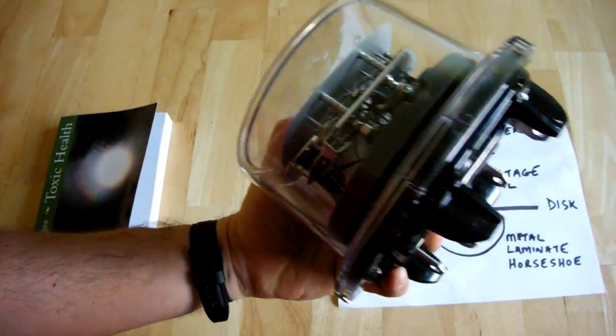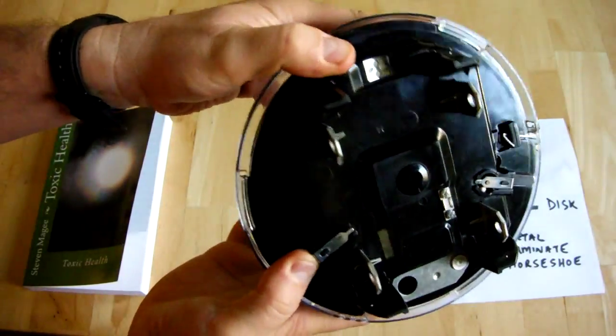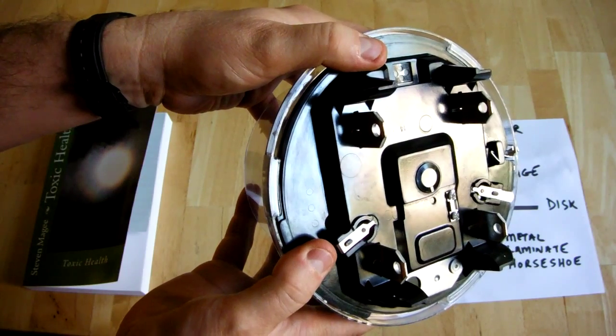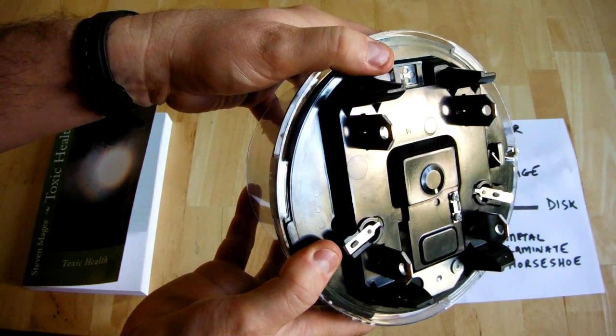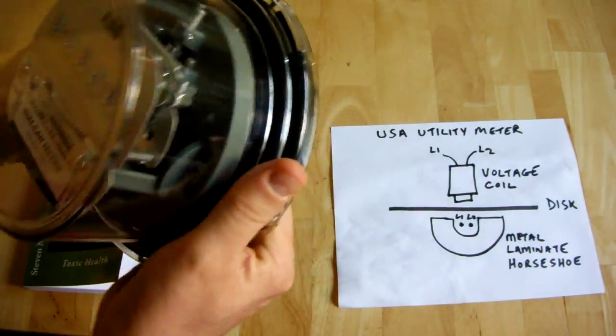This is an electrical utility meter. If you look at the back, it has four terminals. On the American utility system, we have live one and live two. We have an in and an out on the back for each of the live connections.